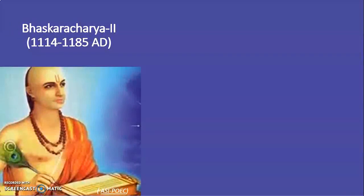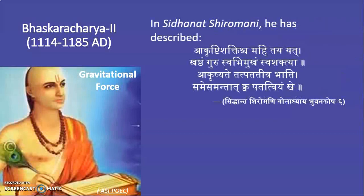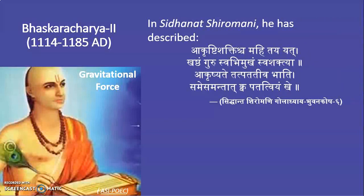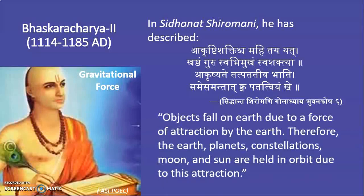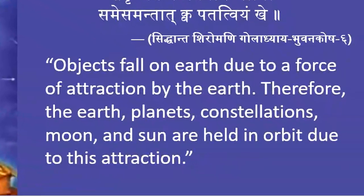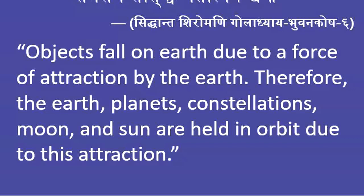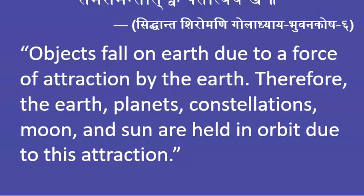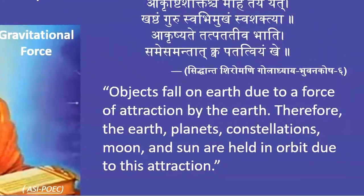Let us talk about science in ancient India. There is an Acharya called Bhaskaracharya II, whose time is around 1114 to 1185 AD. He talked about gravitational force. In his commentary Siddhant Shiromani, he described that objects fall on Earth due to a force of attraction by the Earth, and therefore the Earth, planets, constellations, Moon and Sun are held in orbit due to this attraction.